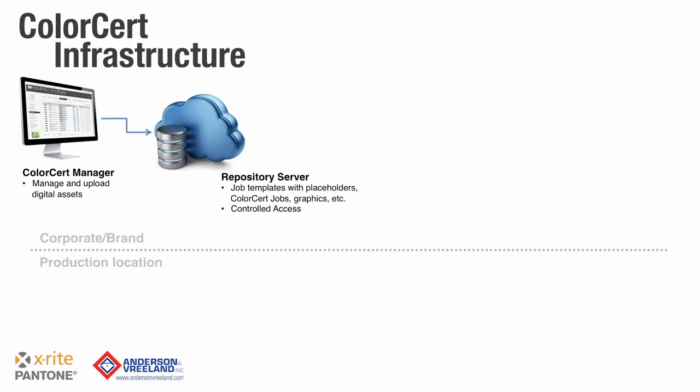There are a number of advantages to using a repo server. For example, we are able to connect ColorCert to a repo server, so accessing files from the server is no different than accessing a local file. We can access the repo server from anywhere in the world, and anyone the owner grants access to is able to gather this data. It is also very easy to control who has access to what data. The data is replicated on servers around the globe for fast access and redundancy in case of a server failure — data is automatically rerouted from another server.